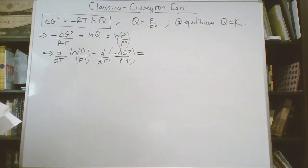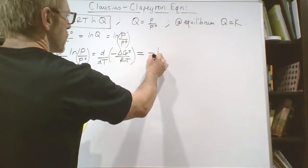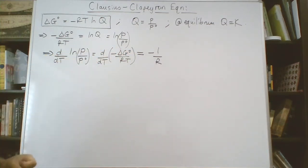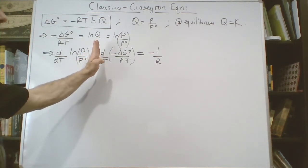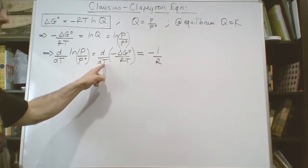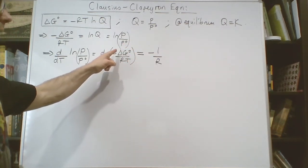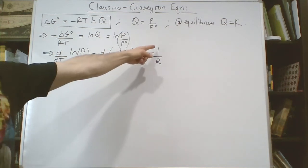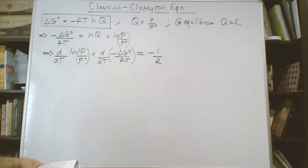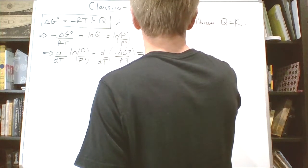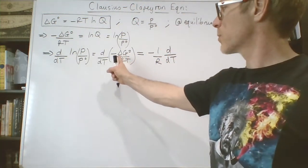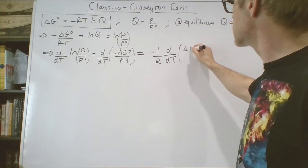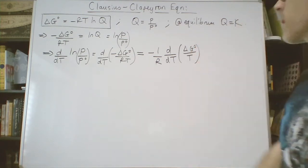Now we can write that equal to minus 1/R times d/dT. We're pulling the 1/R out of this parenthetical term because d/dT acts on anything to its right, but it has to be something that's temperature dependent. R is not temperature dependent, so we can ignore R from the action of d/dT. We write the R term to the left of our d/dT term, and what's left is just ΔG°/T.